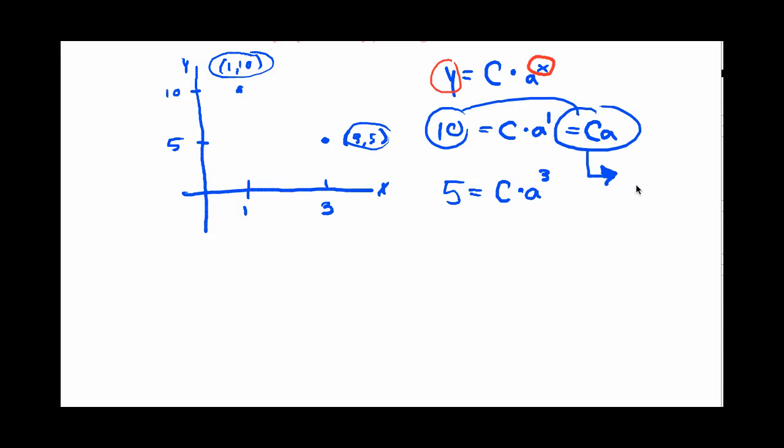And if I take this thing and solve it for one of the variables, for example, if I solved this equation for C, I would get C equals 10 over a. So I don't know what C is in terms of a number, but I do know it's 10 over a. And I can actually use that now to substitute in right there.